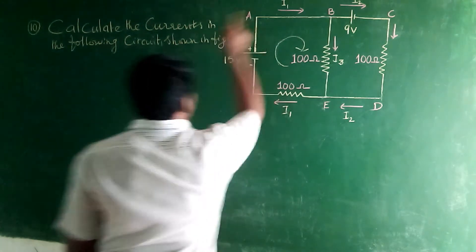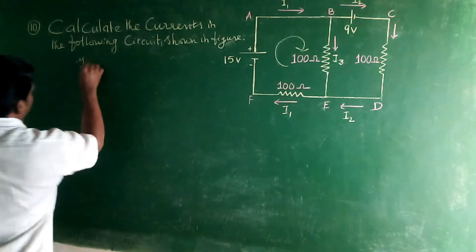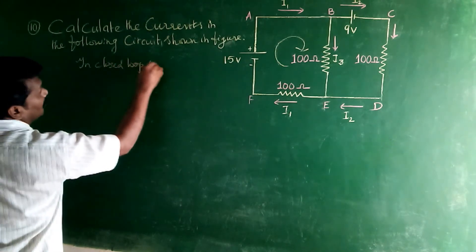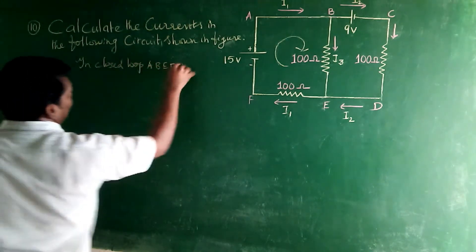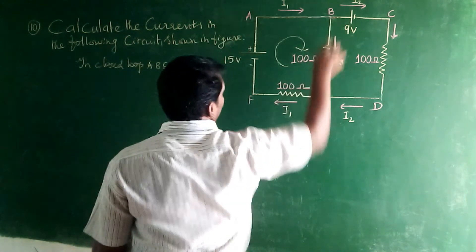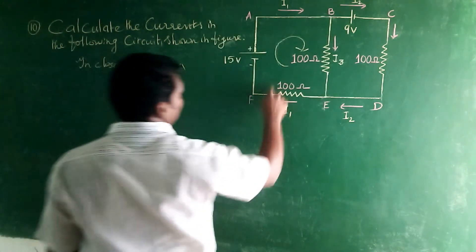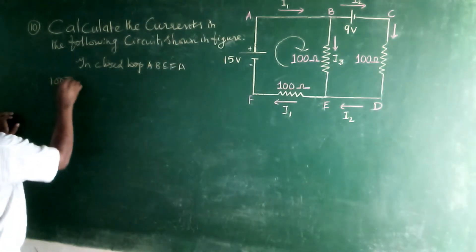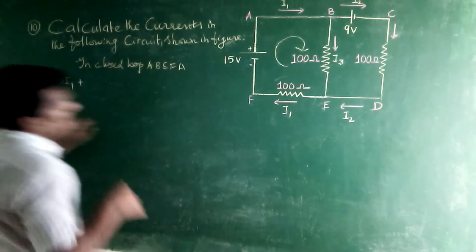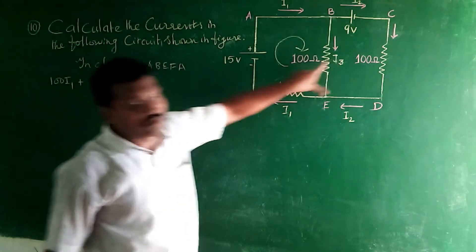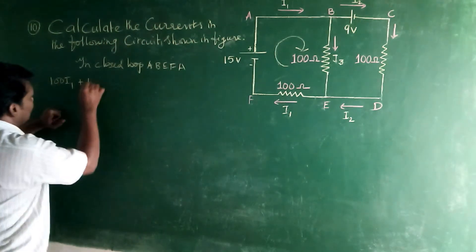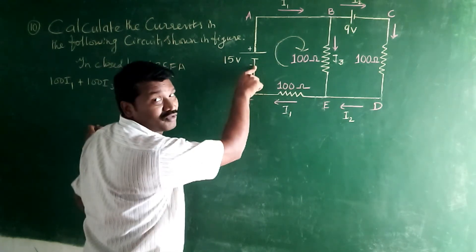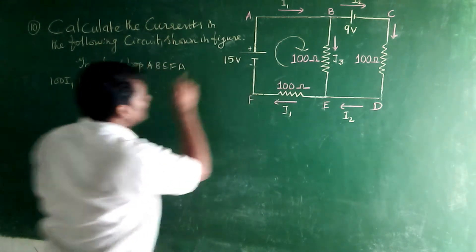Now we have the current I1 through 100 ohm resistor. So 100 I1 plus 100 I1, we have the 100 I3. So 100 I3 equal to, in this loop, we have the voltage source. Now, that is current passing through 15 volts.